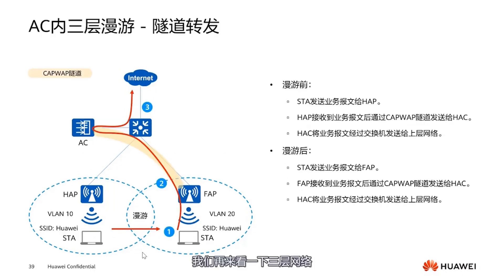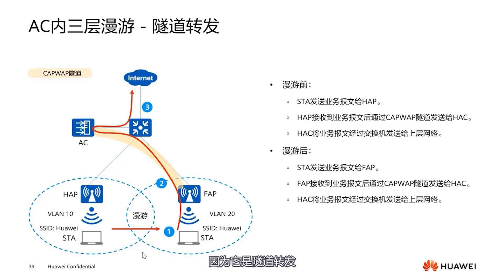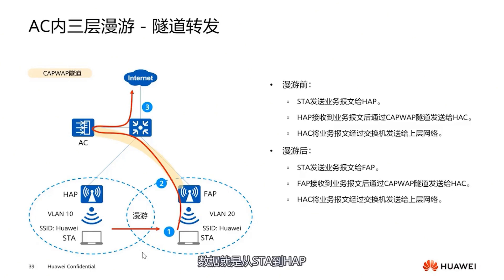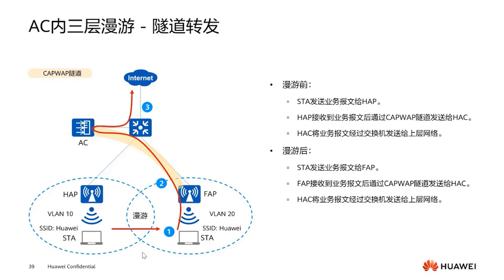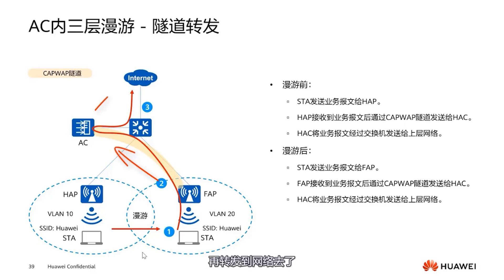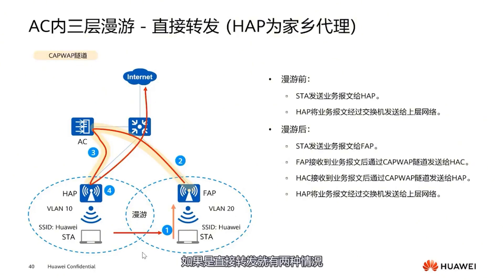For Layer 3 network tunnel forwarding: because it is tunnel forwarding, all data travels via the CAPWAP tunnel. Data travels from the STA to the HAP, then from HAP to the AC, and then HAC sends it out to the network. After roaming, it goes from FAP to the AC and then is forwarded to the network. This is tunnel forwarding — relatively simple, all within the same AC, controlled by the same AC.